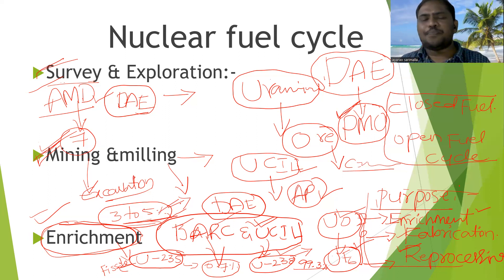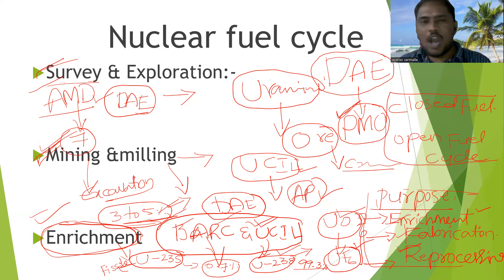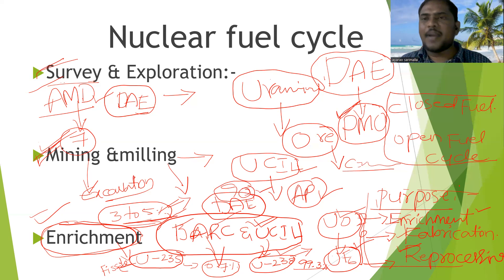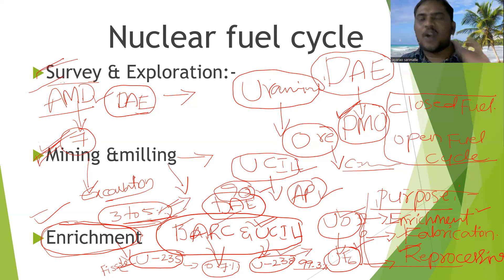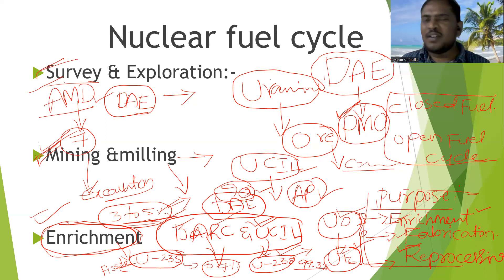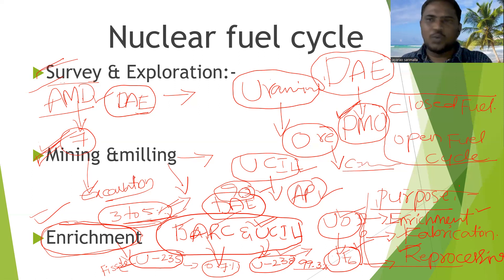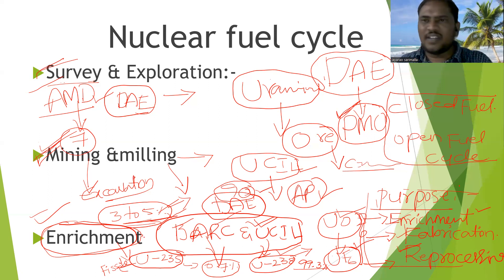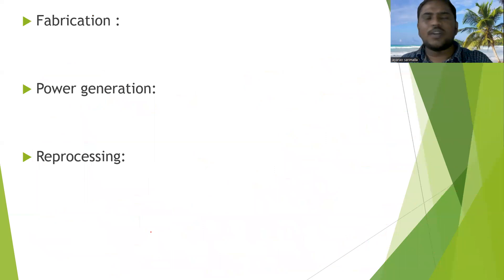Uranium-235 enriched beyond that level is weapon-grade uranium. This distinction was also asked as a question in the APPSC group exam. The enrichment process leads directly into the next step, which is called fabrication.